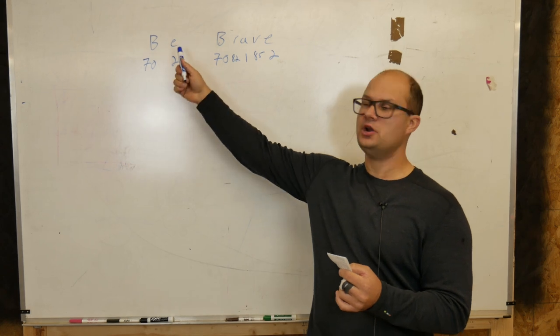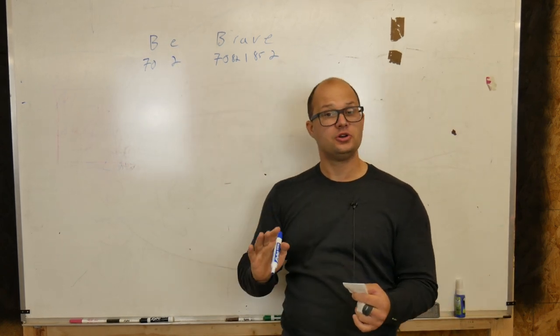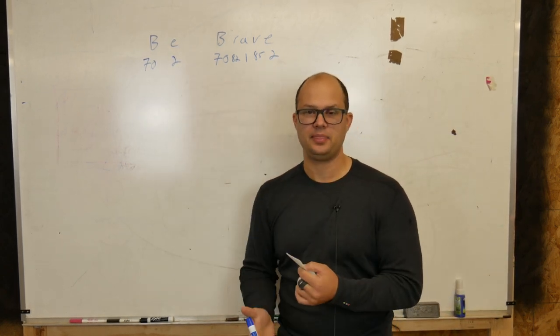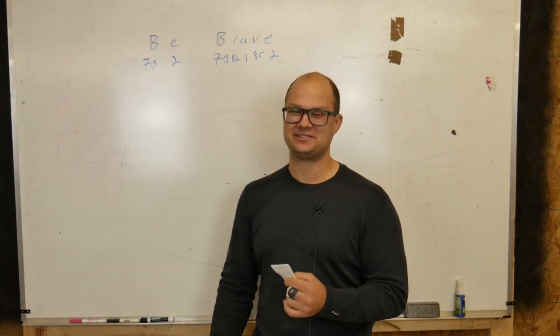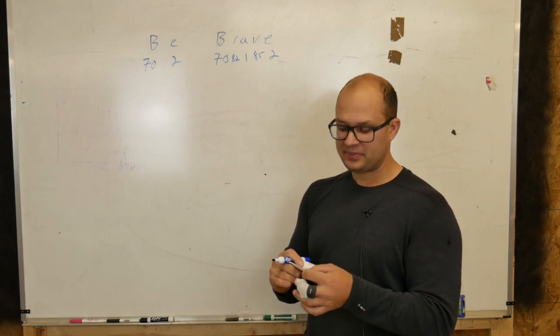A turns into 1. V turns into 85. And E turns into 2. So we've transcribed our numbers into letters. Now, when you're doing this, use paper, and then keep your lines as straight as possible. That's going to help you out later. Trust me, I've learned that one the hard way.